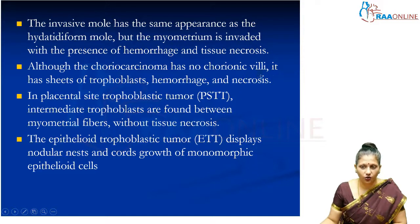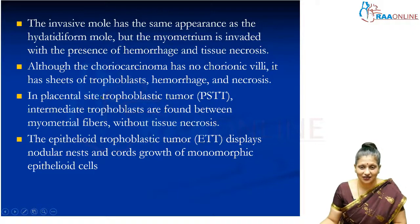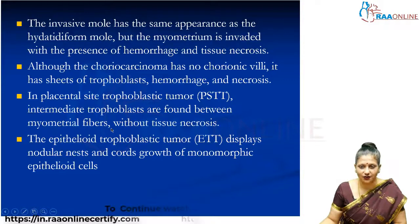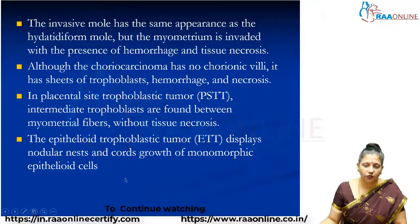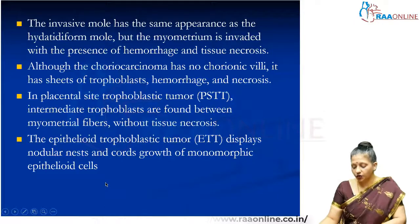Choriocarcinoma has no chorionic villi but has sheets of trophoblast, hemorrhage, and necrosis. Metastatic implants may not have chorionic villi but may have trophoblast with hemorrhage and necrosis areas. In placental site trophoblastic tumor, intermediate trophoblast can be found within the myometrial fibers. In epithelioid trophoblastic tumor, there are cords of monomorphic epithelioid cells. These are all the histological variants of non-metastatic gestational trophoblastic neoplasia.